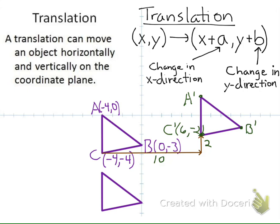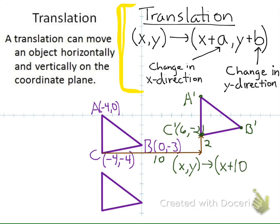We can use that to see our translation notation, which we have in the top right corner. That tells us we go from a point in the original to the point on the image, where we have an A and B value representing the change in the x direction and the change in the y direction. So if we were going to look at the translation we did, we took every point from (x, y) on our original to (x + 10, y + 2) — we added 10 to the x direction and 2 to the y direction.